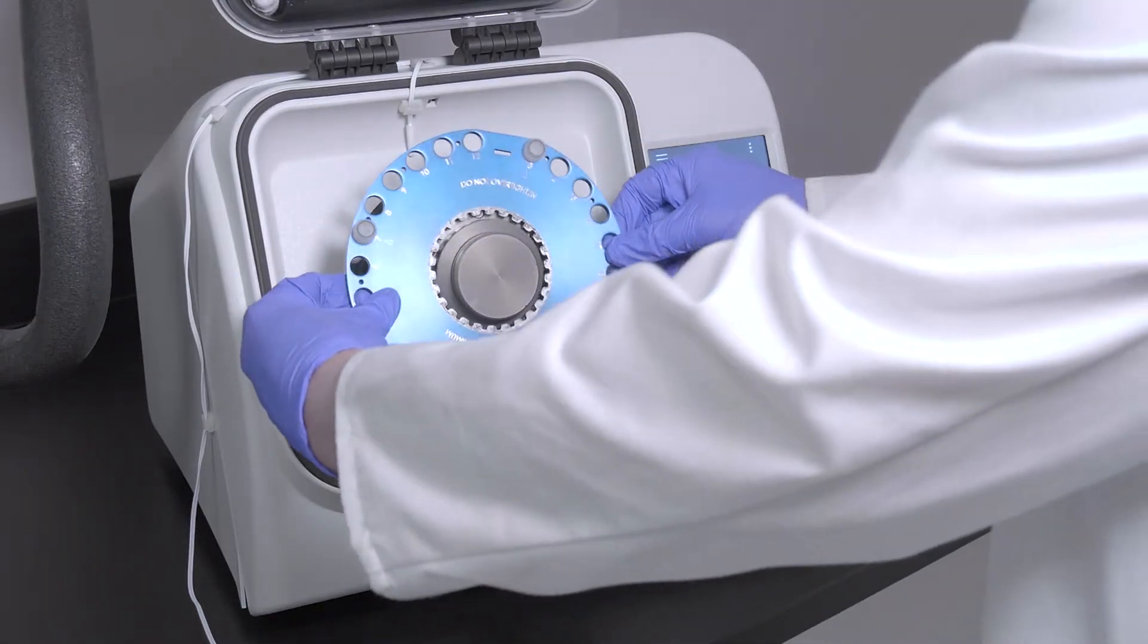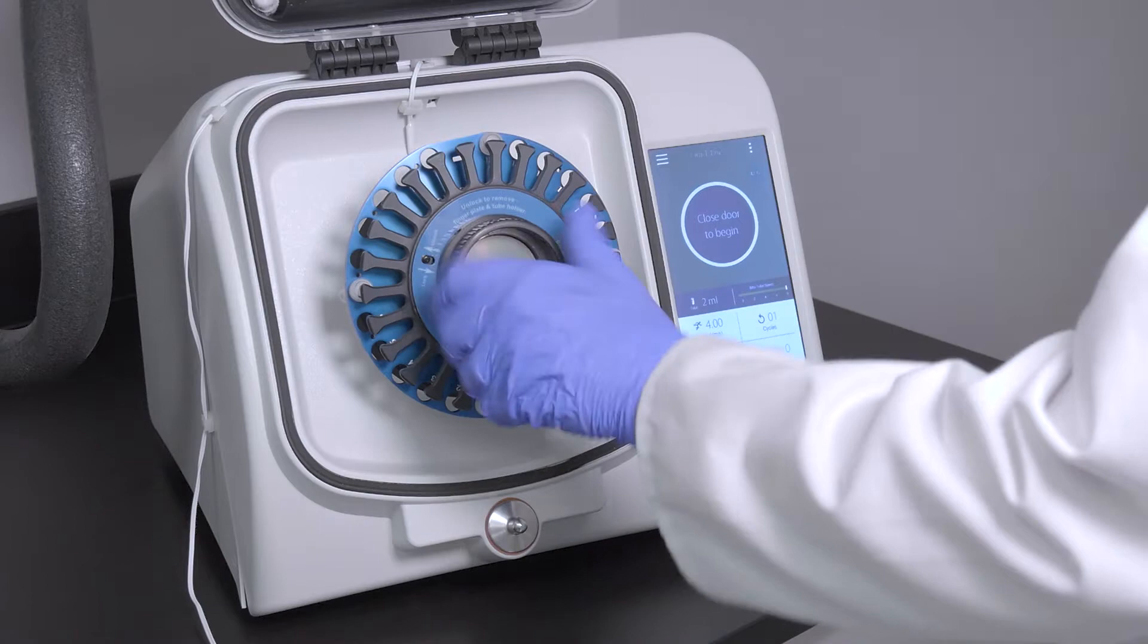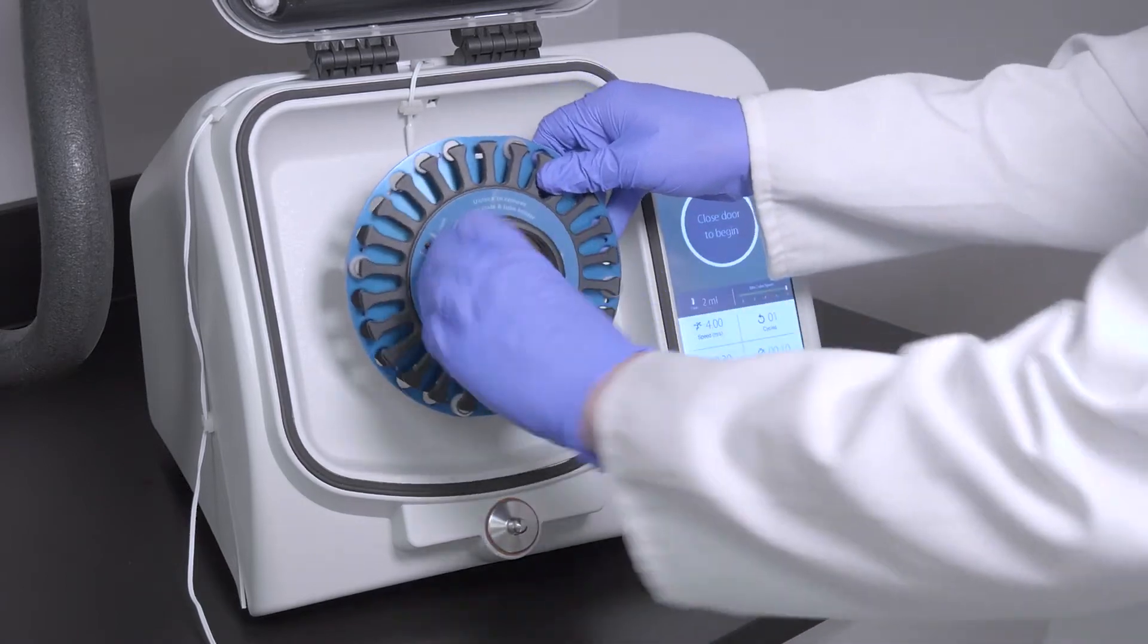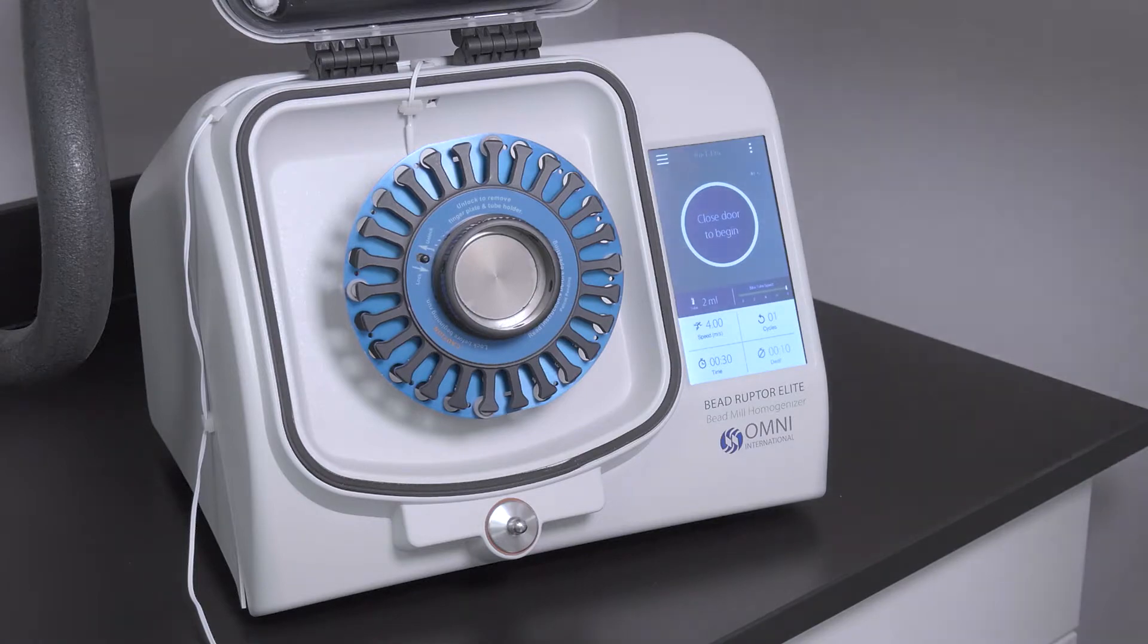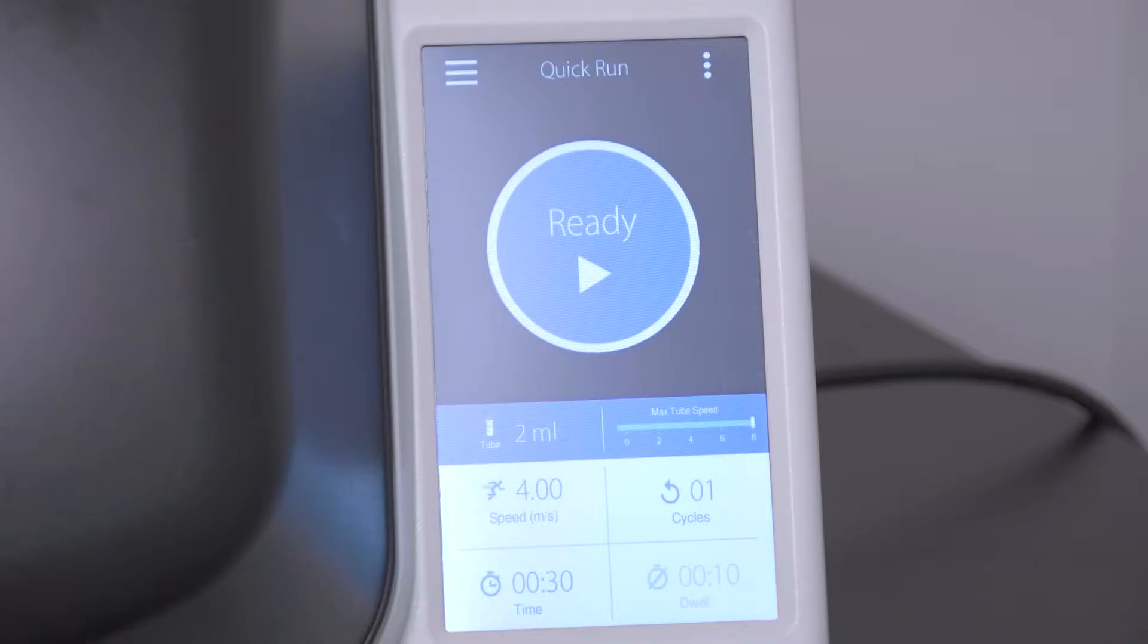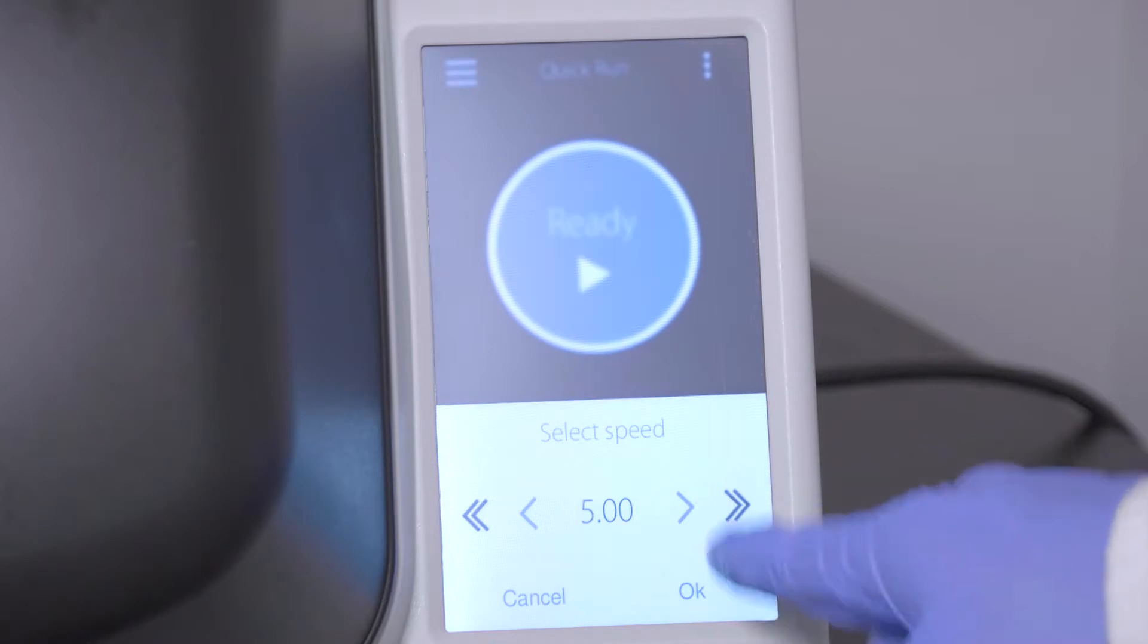Load your samples into the BeadRuptor processing chamber. Fasten the finger plate securely and close the lid. Input your desired time, speed, cycle, and dwell settings.